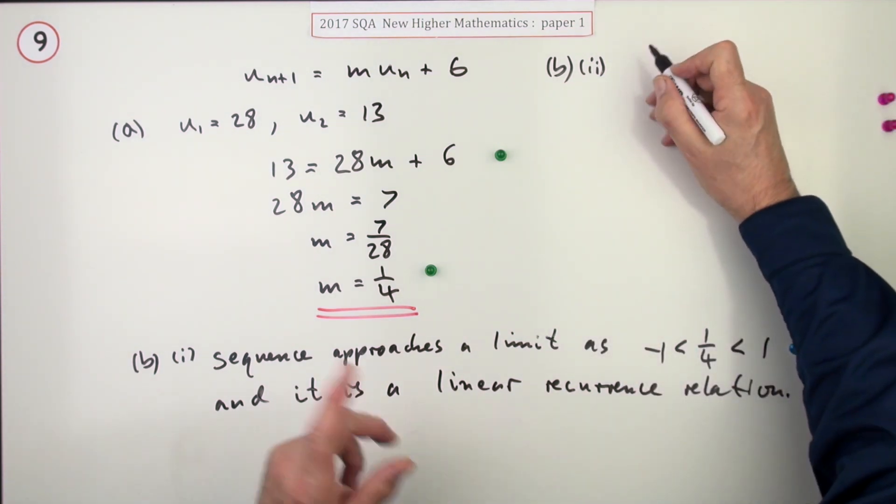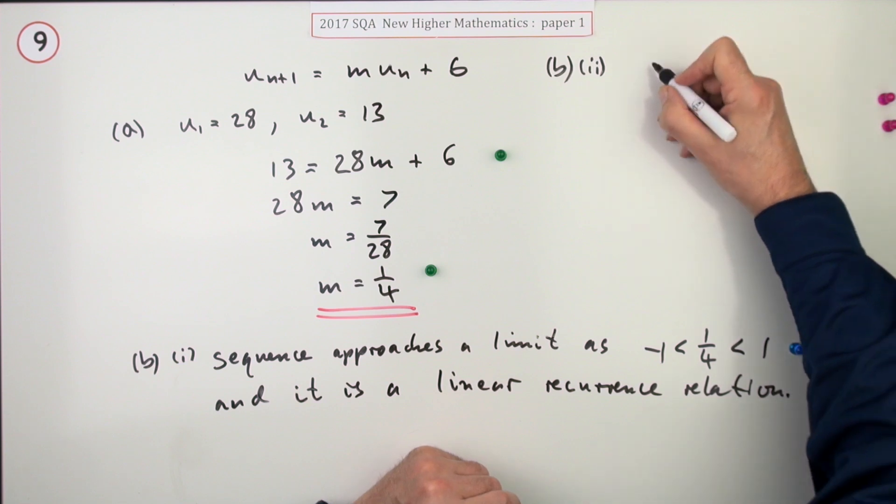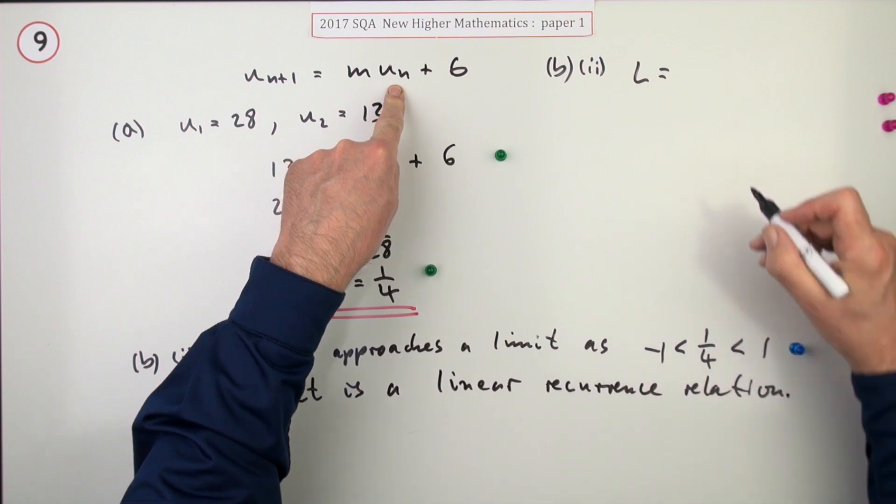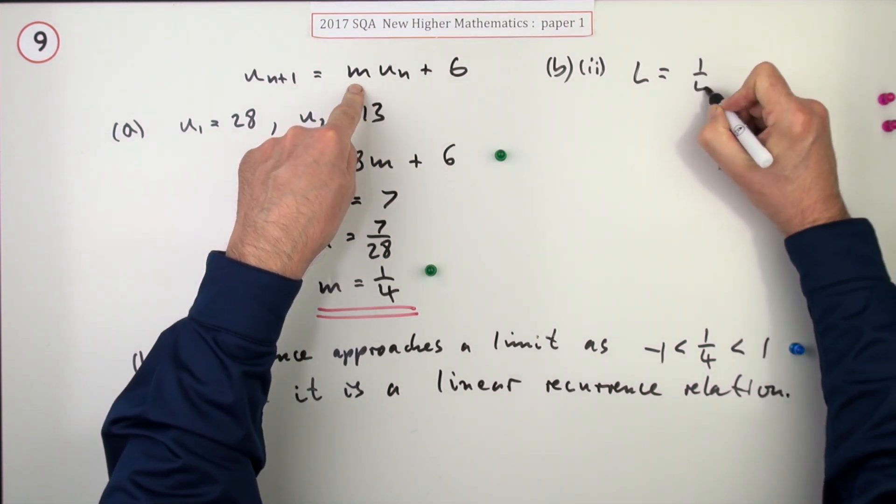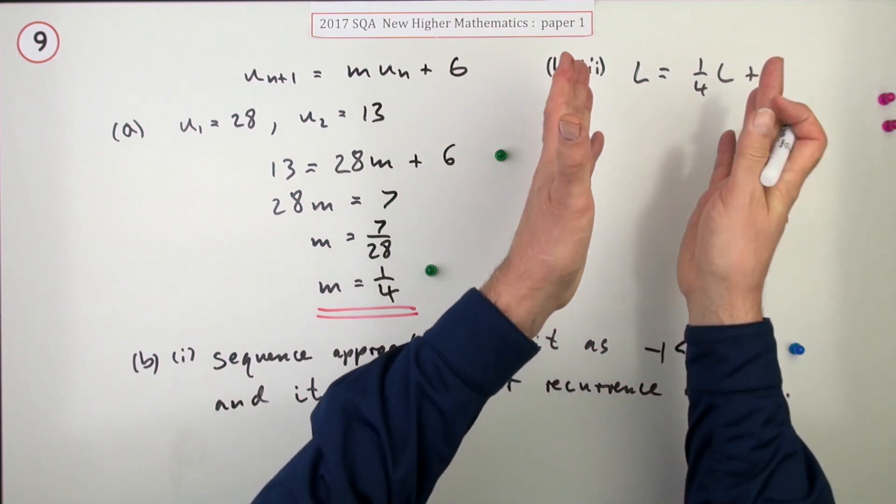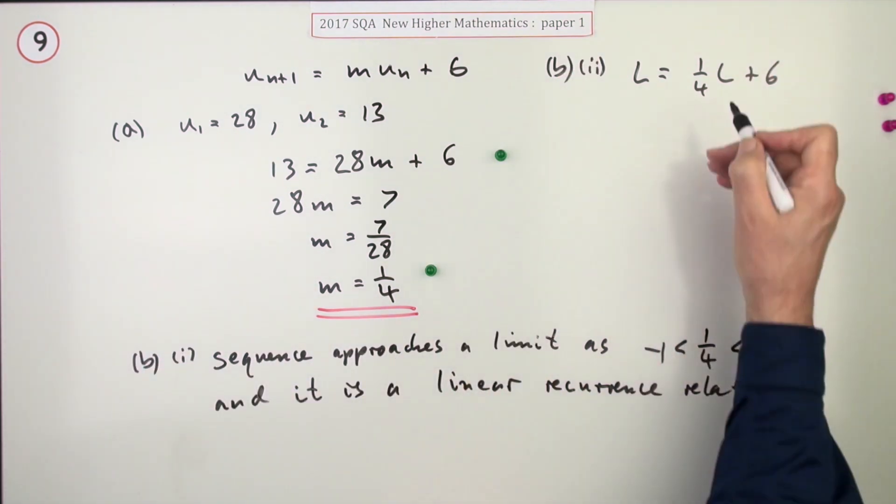Alternatively, you could be more rigorous than using that formula, which after all you could argue is just rote, and state, well, what does reaching a limit mean? Reaching a limit means if you start with that number and multiply it by m and add on 6, you end up with the same number again. In other words, you've reached a fixed point there. You've reached a limit. You're not going anywhere else.